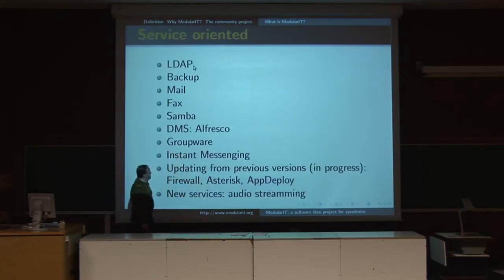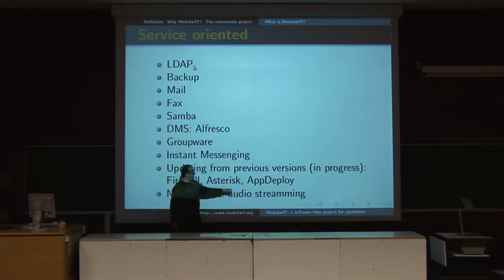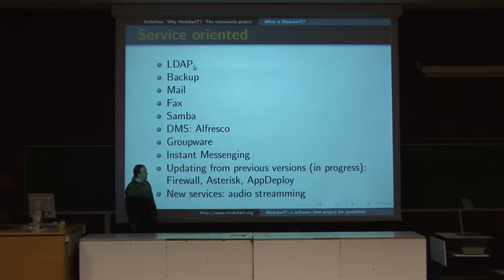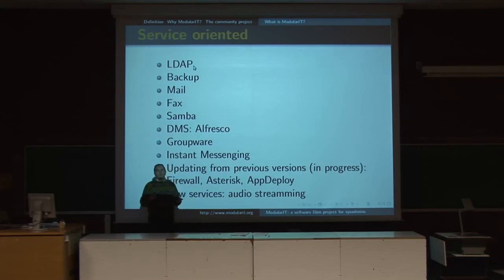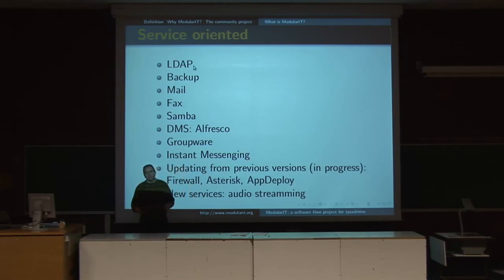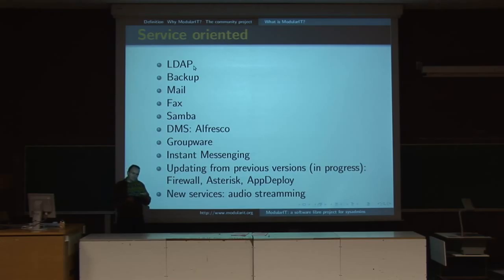We have all these services, and we are updating from previous versions of this architecture. The firewall is an app to deploy. This is a machine for deploying Windows clients. We are right now working on an audio streaming server — some customers asked for it. Of course, if you develop any application and want to include it in this architecture, it's perfectly possible. You just have to follow some rules to modularize a service. This resolves many problems like deployments and managing — all the tedious activities that companies don't want to do. They can concentrate their efforts on what they do best, which is the application itself.